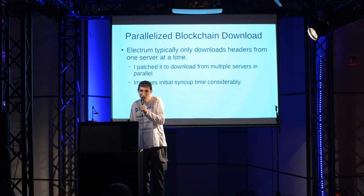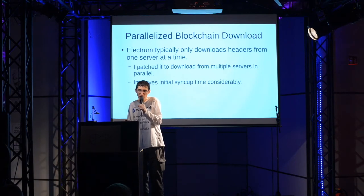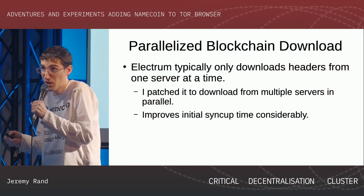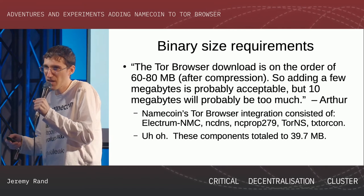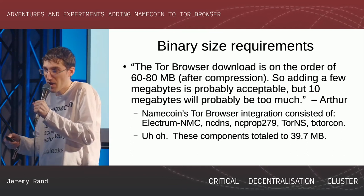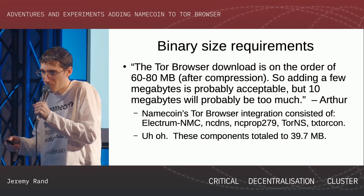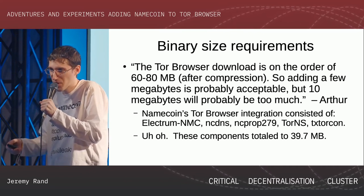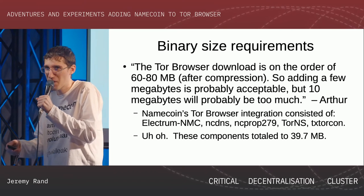For headers after the final checkpoint — things mined after the software was released — Electrum normally only downloads headers from one server at a time. I patched it to download from multiple servers in parallel, which makes it sync a lot faster. Arthur also had opinions about the impact on Tor Browser's binary size. He said Tor Browser is on the order of 60 to 80 megabytes, so adding a few megabytes is probably acceptable, but adding 10 megabytes is probably too much. The problem is all the components of Namecoin's Tor Browser integration together came to 39.7 megabytes — we were going to have to optimize that a lot.